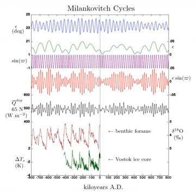Orbital inclination: The inclination of Earth's orbit drifts up and down relative to its present orbit. This three-dimensional movement is known as precession of the ecliptic, or planetary precession.